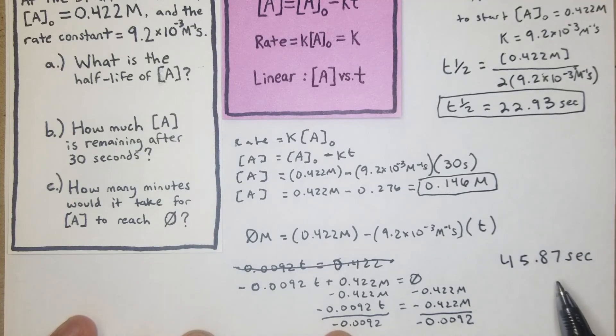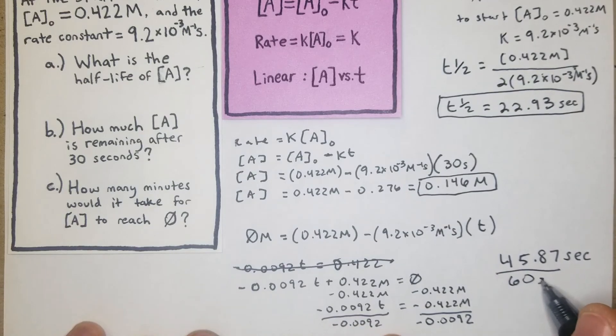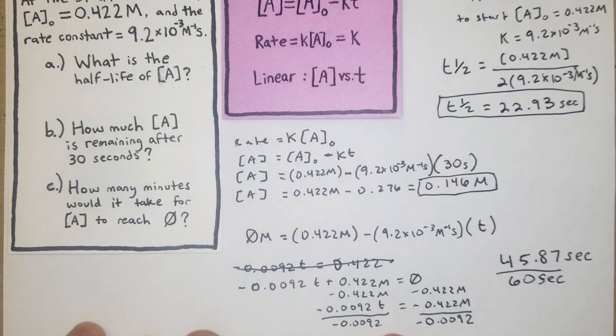But this is where you've got to be careful. What did it actually ask for here? It says how many minutes would it take for the concentration of A to reach 0. So now what we're going to do is just a simple conversion divided by 60 seconds that will leave us with minutes.